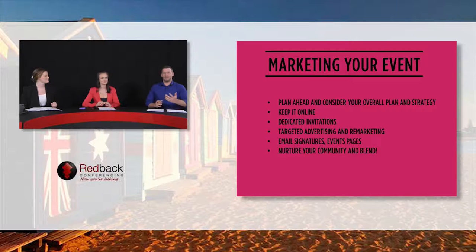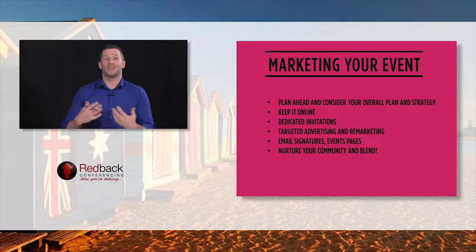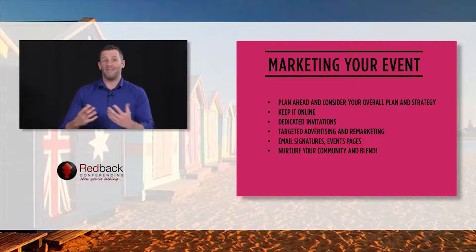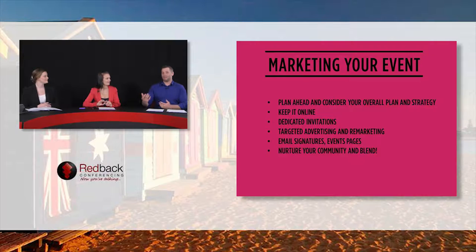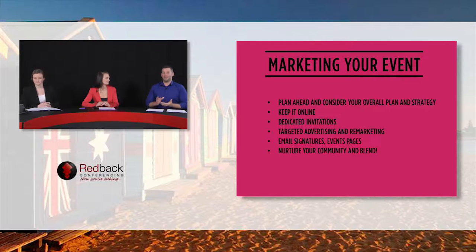A-B testing is not done enough. A-B testing is the same content with either two different titles or two different body messages, sent to half your database each to see which gets the highest open rates. One example in the wedding industry had very image-heavy emails that people were deleting immediately. Changing to text-only resulted in a 60% open rate because people didn't realise it was a marketing email straight away — they'd scroll to the bottom, realise it was for a webinar, and click through to register.